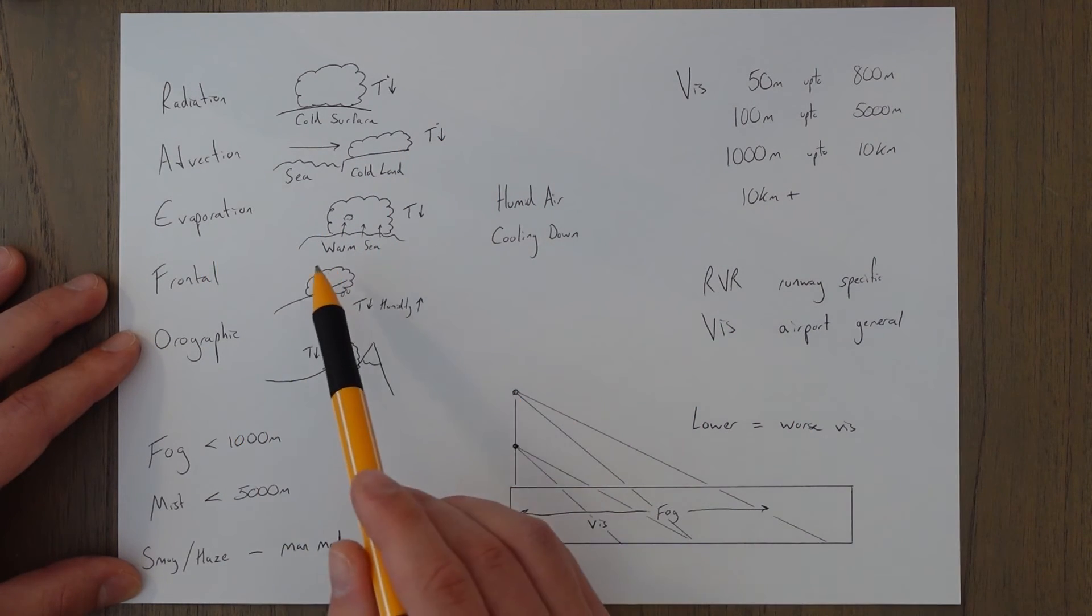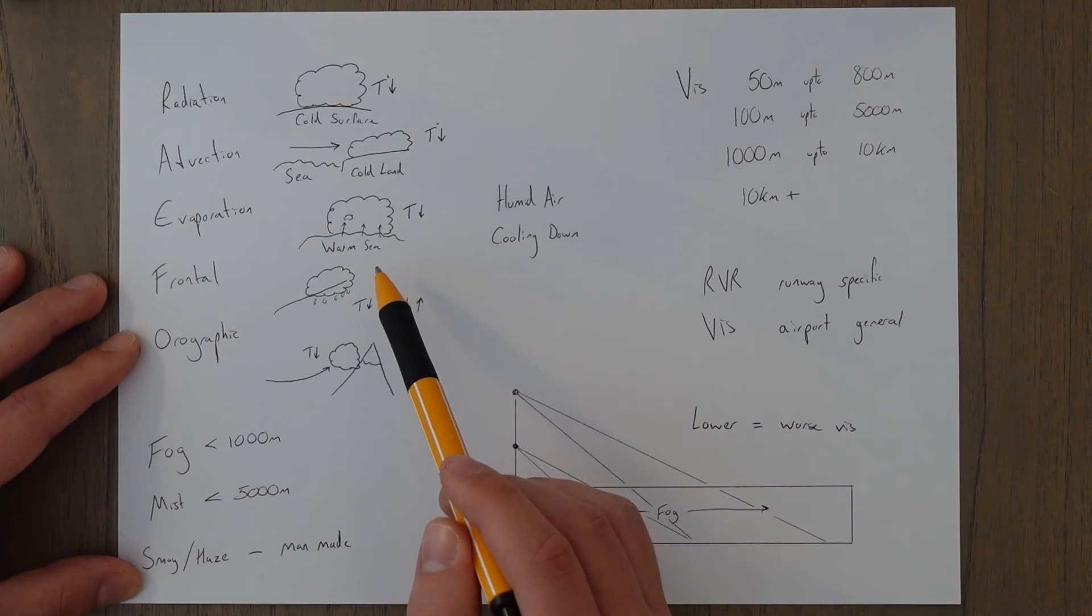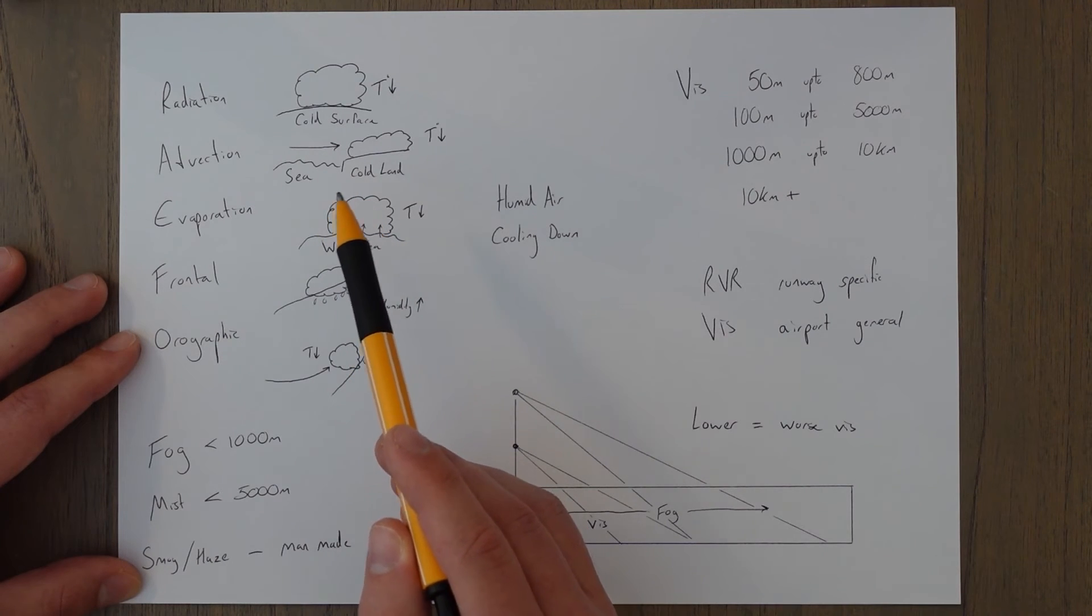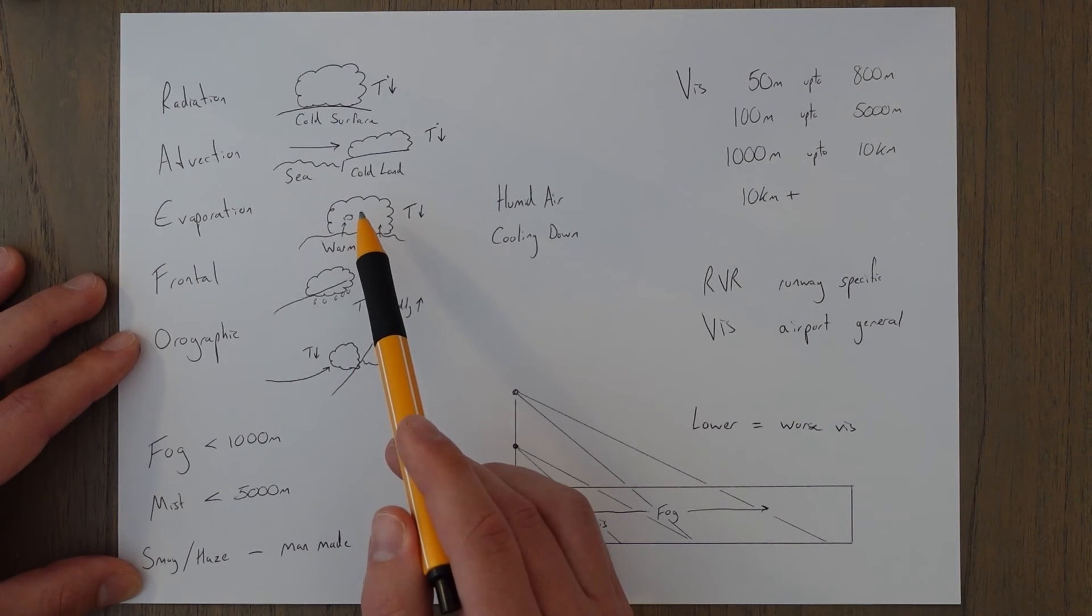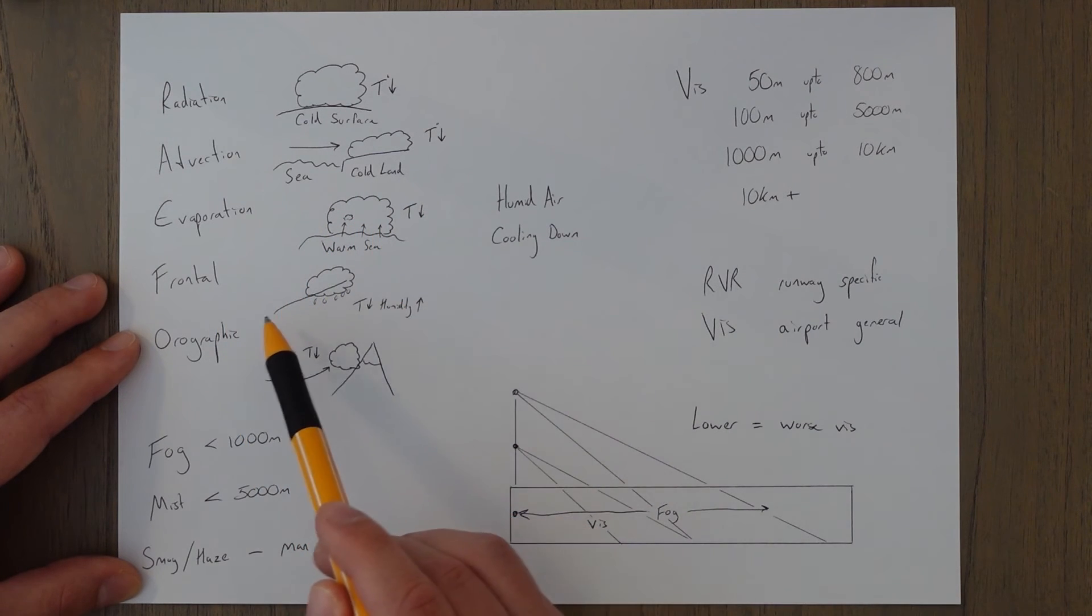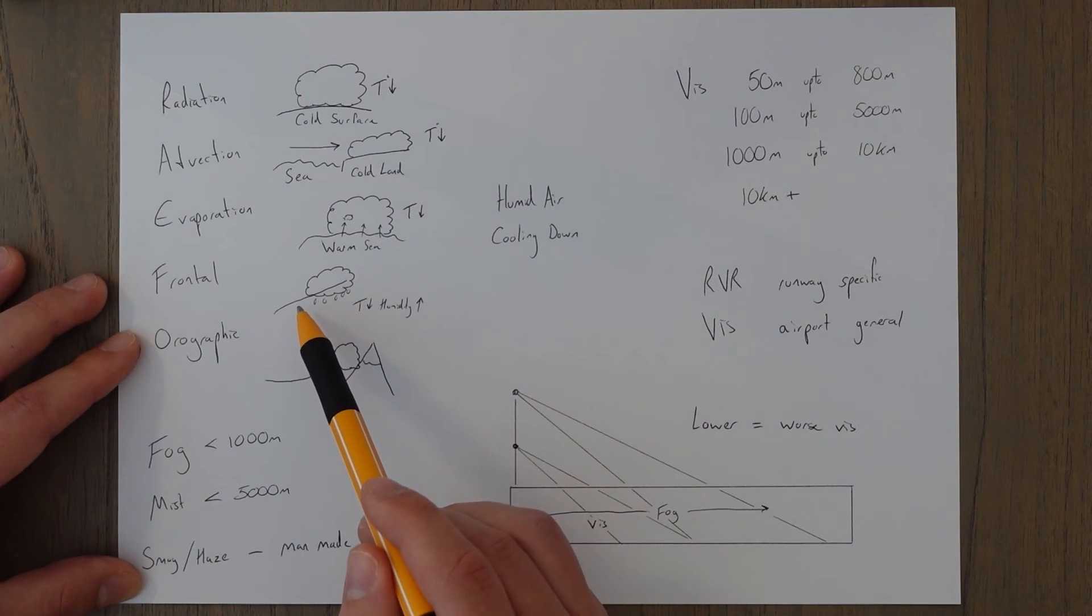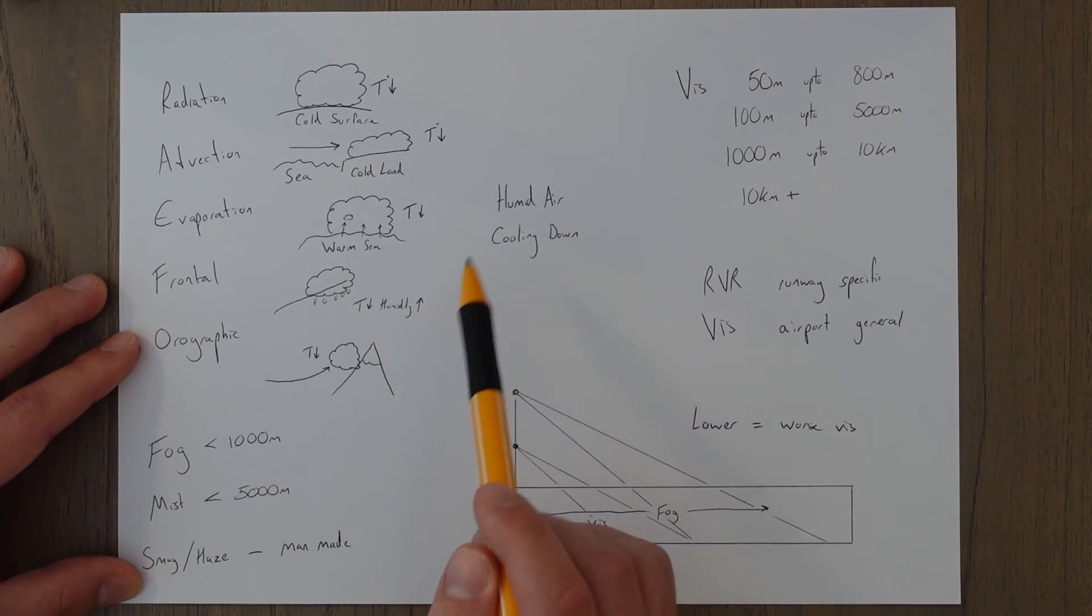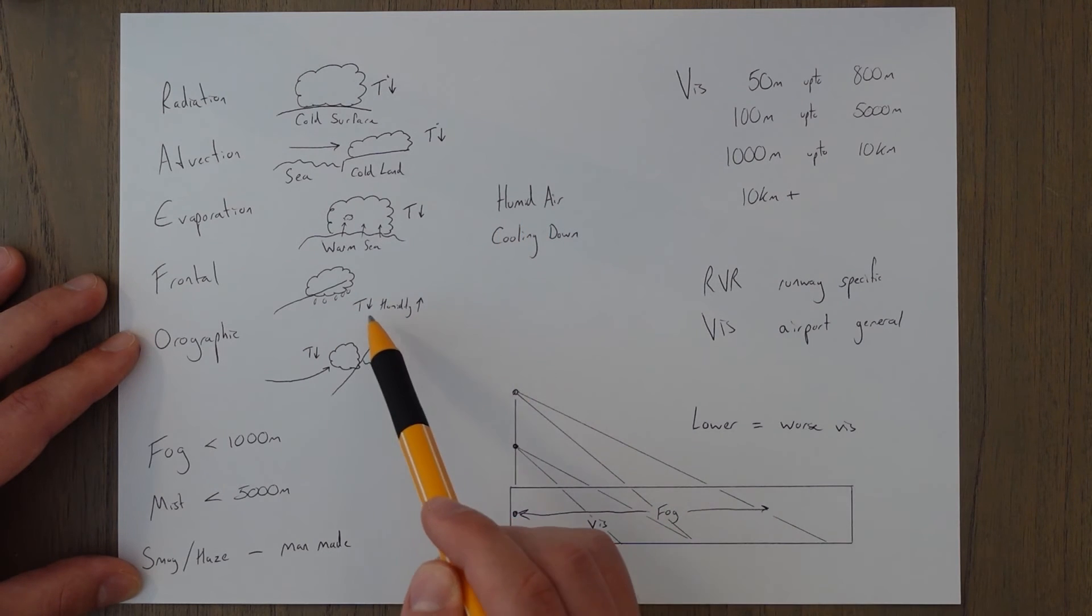Evaporation fog is when there's cold air above a warmer sea in the Arctic for example, and the evaporating air immediately cools back down to below the dew point and condenses out to form fog. Frontal fog is formed by falling precipitation and air coming into contact with colder conditions, and the precipitation raises the humidity levels so you've got humid air and the colder air cools that down and to form fog to below the dew point.